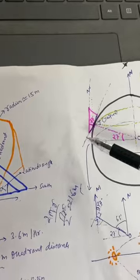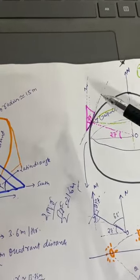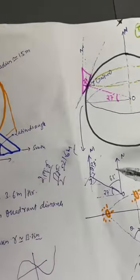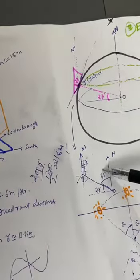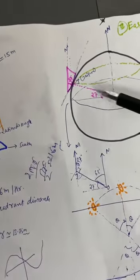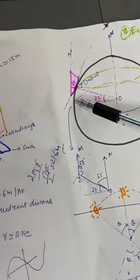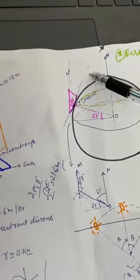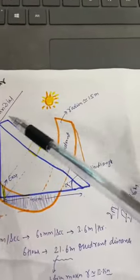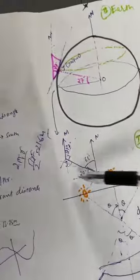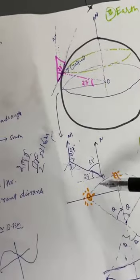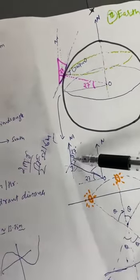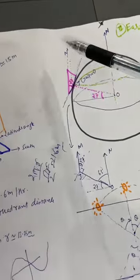We can see that if we try to plot it in this way, having the base of the Samrat Yantra to be tangential to the sphere and the top pointing towards the north, and we do the calculations, we can see that the angle will be 27 degrees if it has to face the north direction.